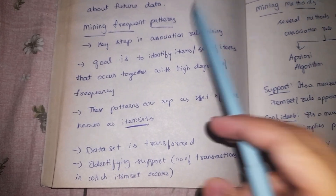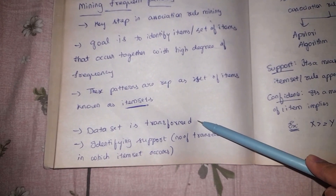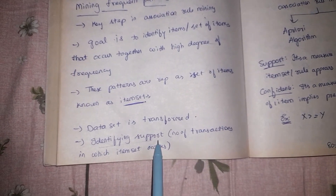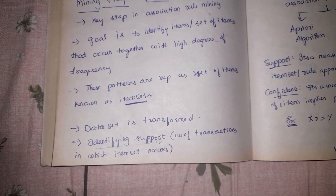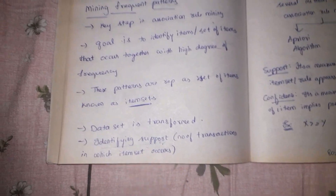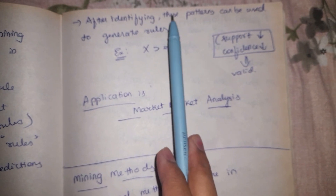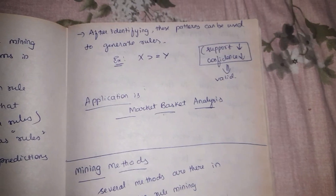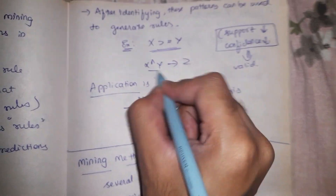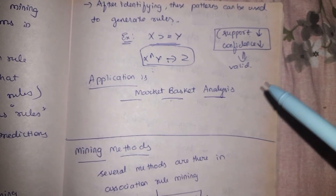There are a few steps we need to perform for mining frequent patterns. First, the dataset is transformed to make it easy for us to analyze. Second is identifying support — support is basically the number of times an item has occurred in a particular dataset. Third is identifying the patterns that can be used to generate association rules, which look something like A implies B.